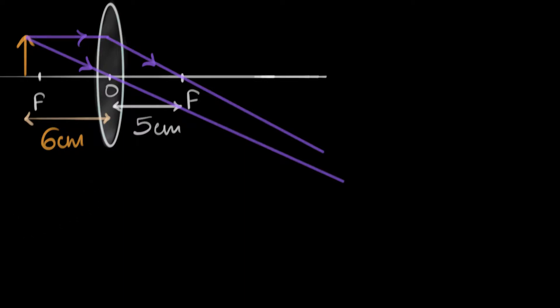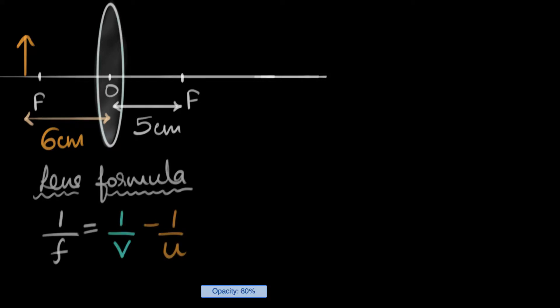So to locate our image without having to draw the ray diagrams, you may guess that we might have to use a formula. And that formula is called the lens formula.